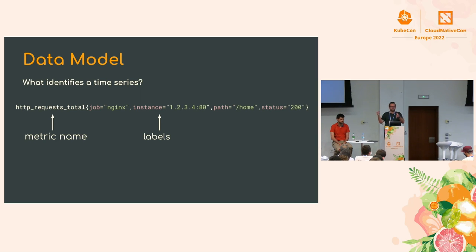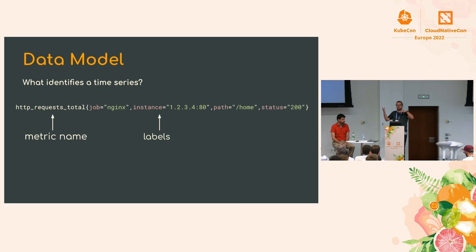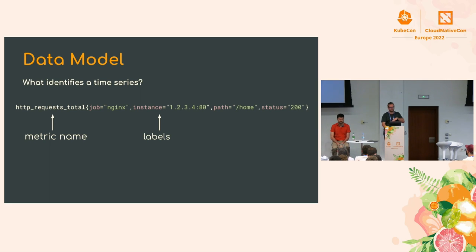As long as we scrape often enough, we can reconstruct how many requests happened in any interval — one minute, ten minutes, seven-and-a-half minutes if you really want to. That's why we use these ever-incrementing counters rather than just recording the rate at any point in time.